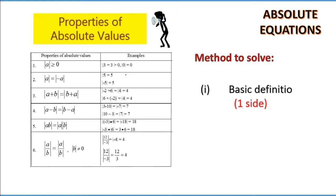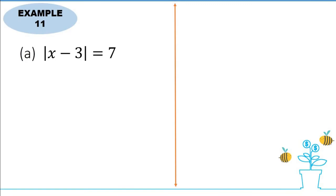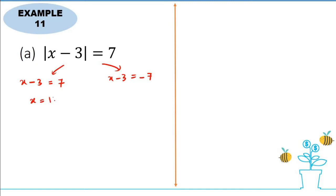There are two methods to solve absolute equations. The first method uses the basic definition when the modulus is on one side. The second method, when modulus expressions appear on both sides, is to square both sides. For example, modulus of x minus 3 equals 7. We divide this into two cases: the first case gives x minus 3 equals positive 7, and the second case gives x minus 3 equals negative 7.